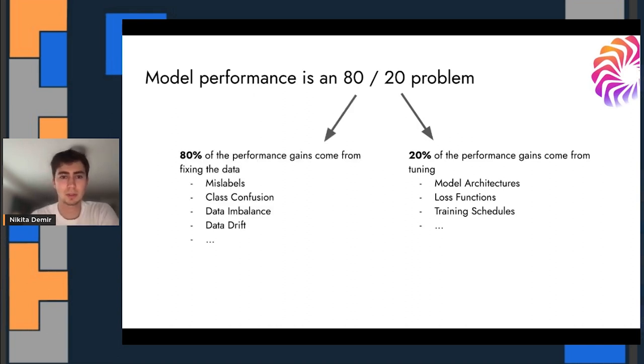But 80% of it still comes from fixing the data. This could be mislabels, class confusion, data imbalance, data drift. These are things that we, as practitioners, haven't actually spent much time historically thinking about, which is kind of crazy because we think that it contributes the most to the eventual model's performance.